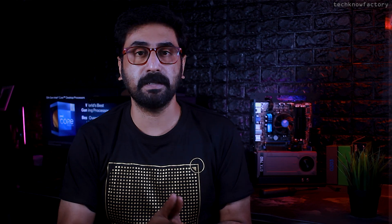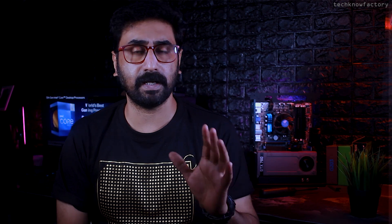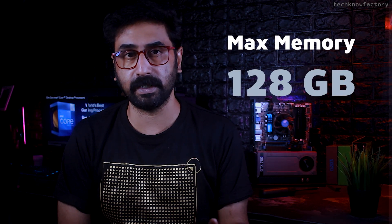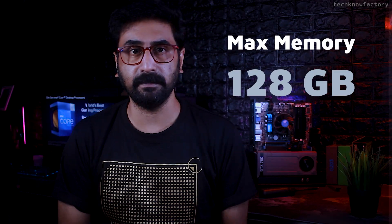For memory, 12th generation supports both DDR4 and DDR5 — however, a single motherboard doesn't support both simultaneously; it's either DDR4 or DDR5 depending on the board. Default RAM speeds are DDR4 at 3200MHz and DDR5 at 4800MHz. With a Z-Series motherboard and XMP enabled, you can use higher frequency RAM.